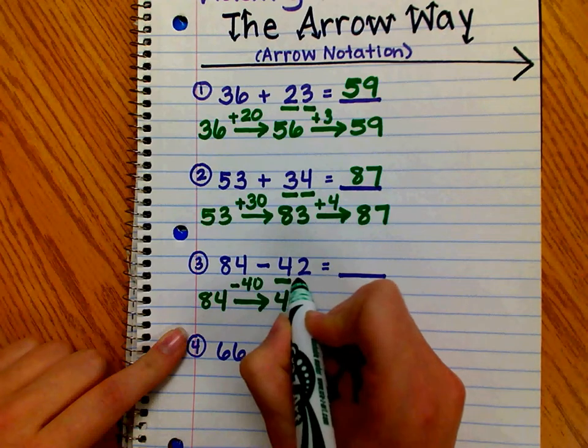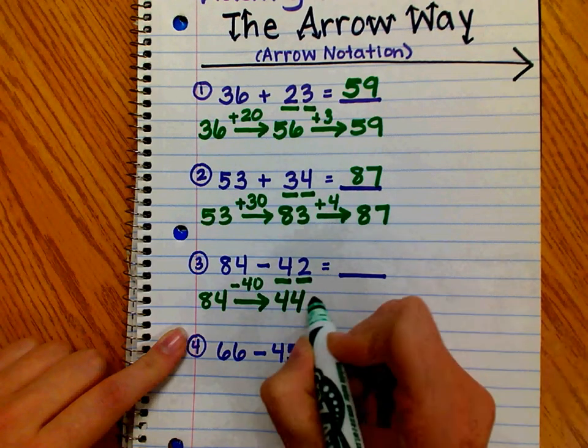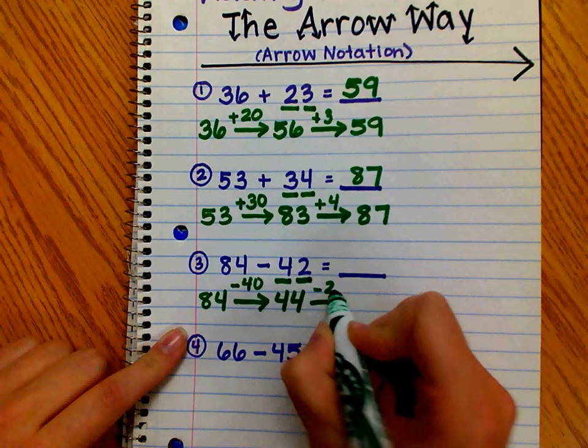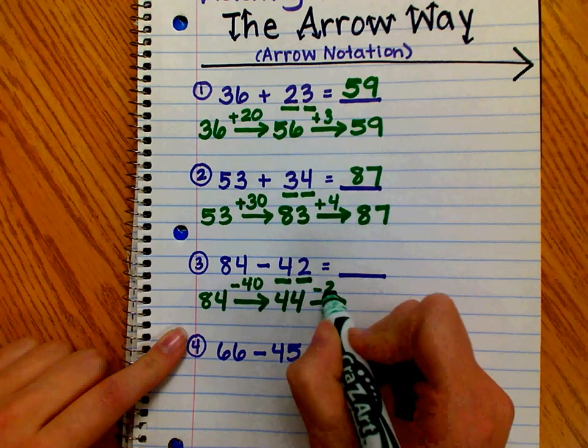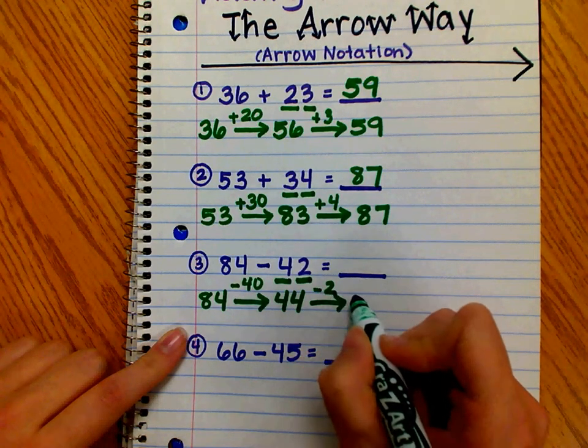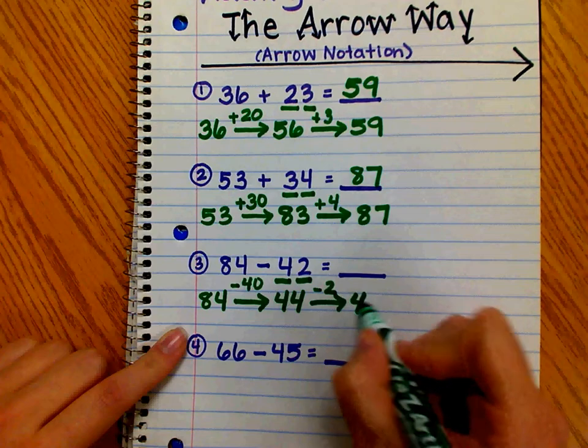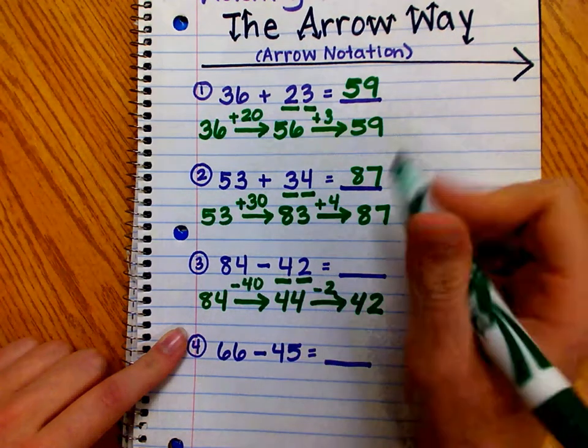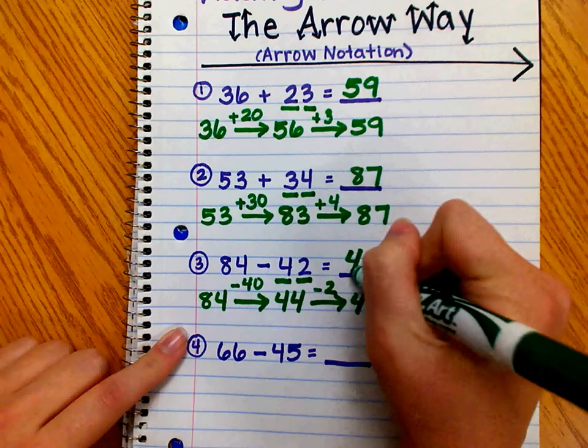Now, we have to subtract the ones. So, 44 minus 2. 4 ones minus 2 ones is equal to 2 ones. We have 4 tens and 2 ones. So, 84 minus 42 is equal to 42.